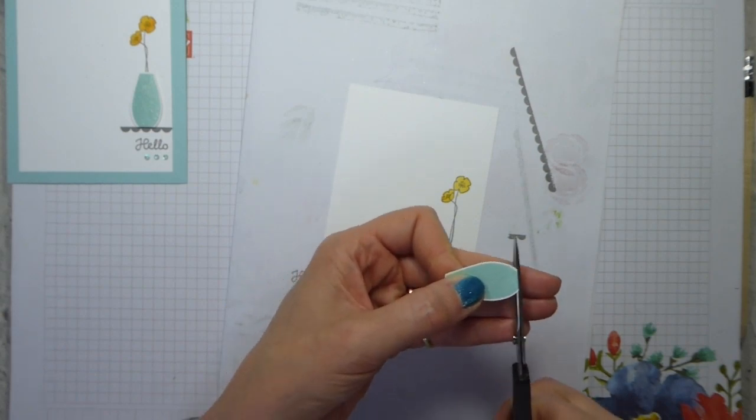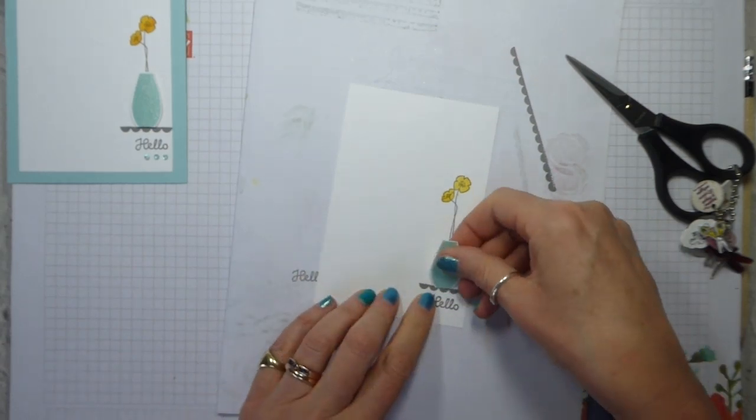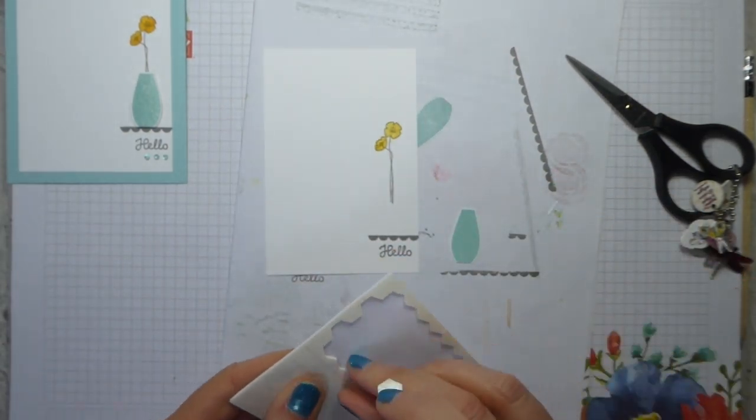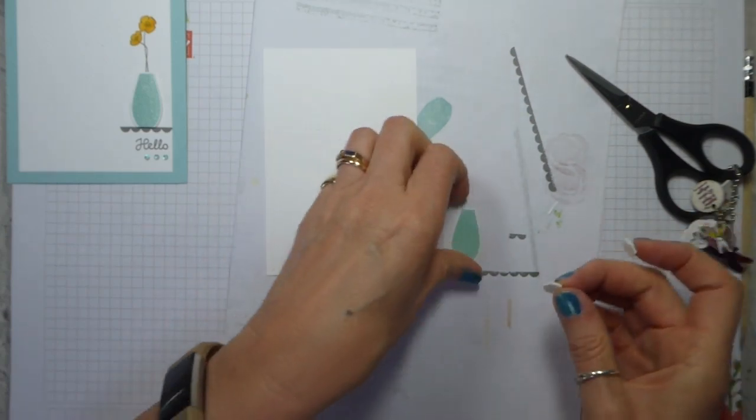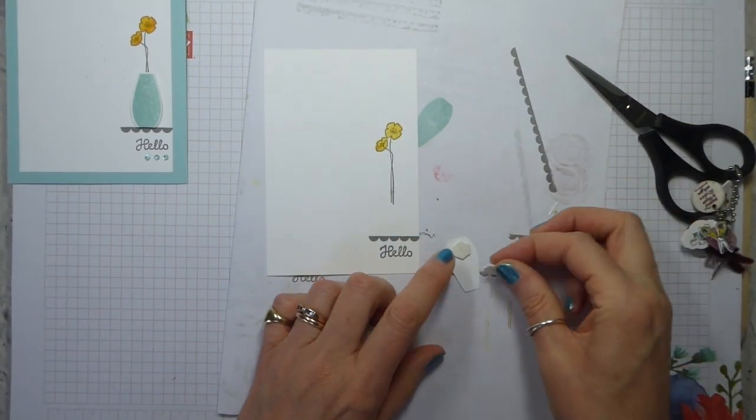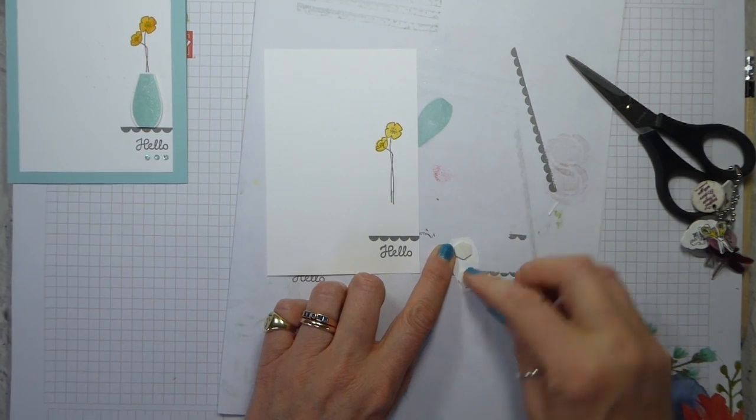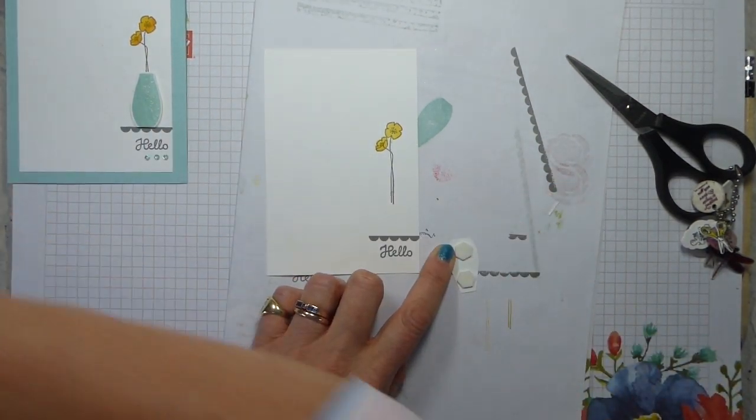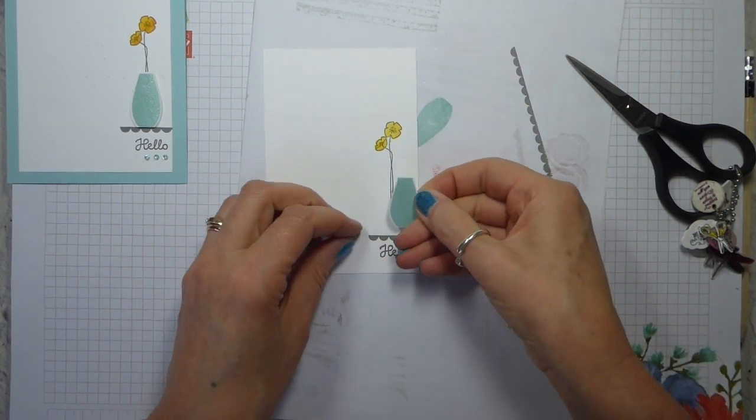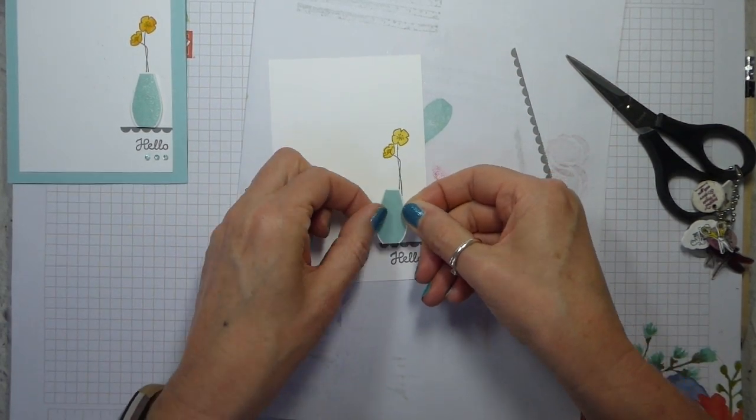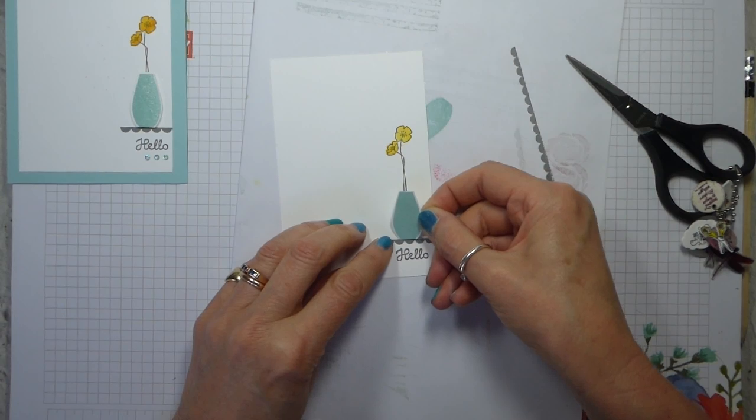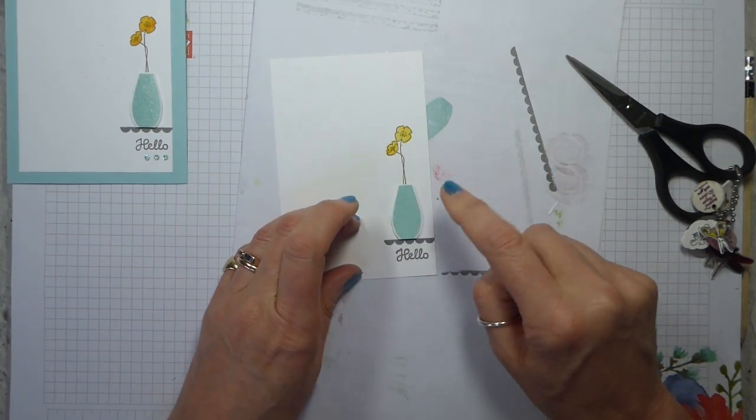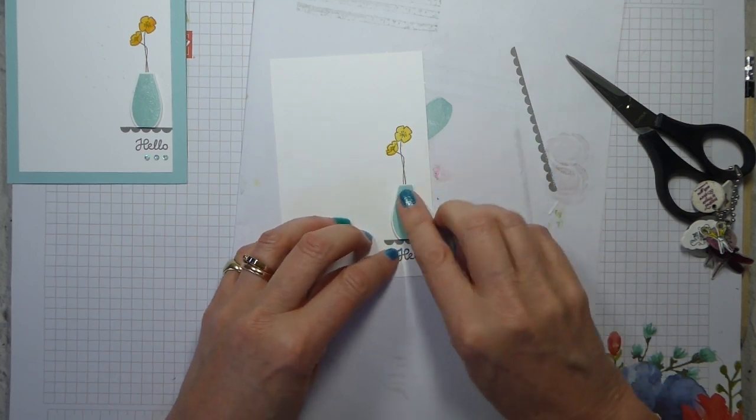So I just need a couple of dimensionals. One there and one there. Peel those off. And pop my vase down so that it sits on the shelf and the flowers come out of it.